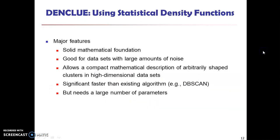There are two parameters: epsilon and minimum points. Epsilon is nothing but the maximum radius of the neighborhood. Minimum points is nothing but the minimum number of points in the epsilon neighborhood of that point. For example, you choose a data point and name it Q. From Q, you have to define the maximum radius and create a circle. Within the circle, if you find a minimum number of points — say minimum points is 5 — you should have minimum 5 or more. That will be sufficient for forming a cluster. Once point Q has the minimum points, the Q point will be defined as a core point.